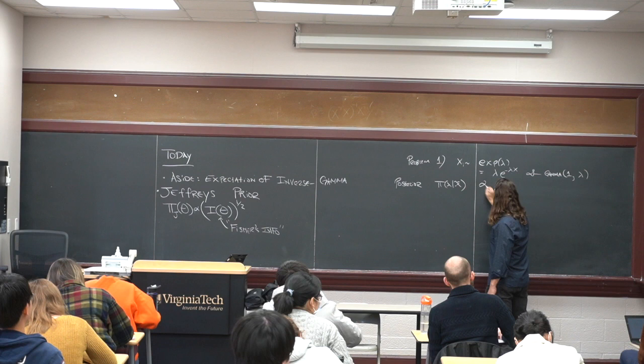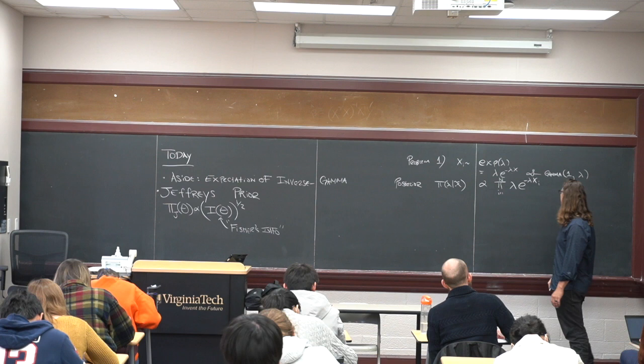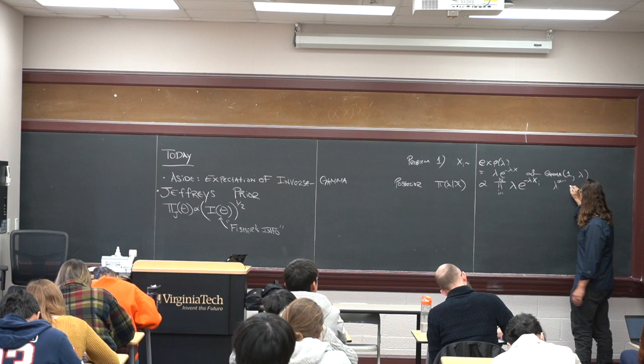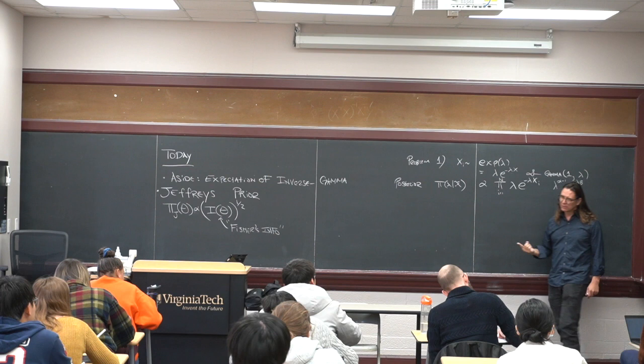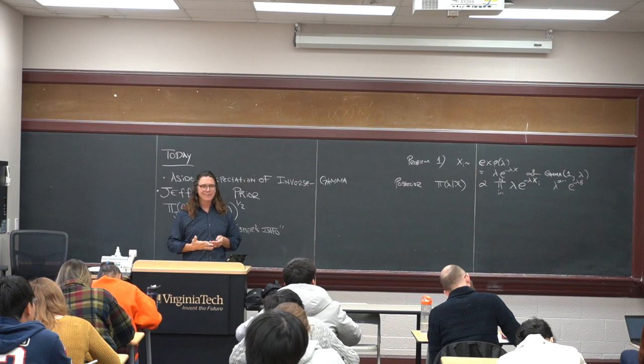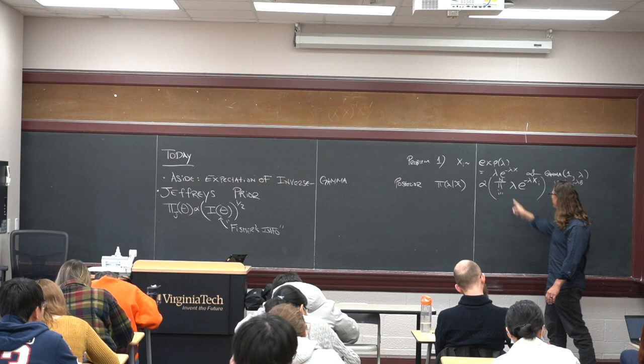So this is going to look like this — the likelihood function is lambda e to the minus lambda x. Then times the prior, which looks like lambda to the alpha minus 1 times e to the minus lambda beta. One error I did see come up is some people took this product and multiplied in their prior repeatedly — that's a mistake. The prior only comes up once; there's only one lambda in there. Likelihood times a prior, not product over the prior.